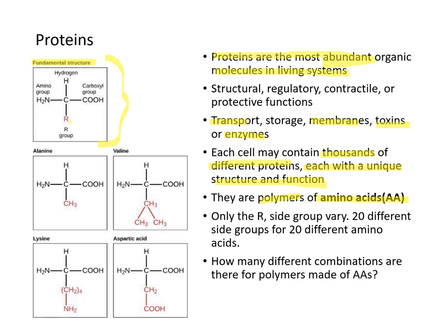Only the R group, or the side chain, differs among the 20 different amino acids — that is the only difference. Given 20 different amino acids that can be arranged in any order in a polymer, the number of possible combinations is enormous, which is why proteins are so abundant, diverse, and unique. For example, alanine and valine are amino acids with nonpolar, noncharged side chain groups.